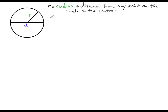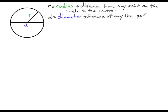If we draw another line that goes directly across the circle right through the center, this line is called the diameter. For diameter, we use a small d, so d equals diameter. The diameter is the distance of any line passing across the circle through the center.